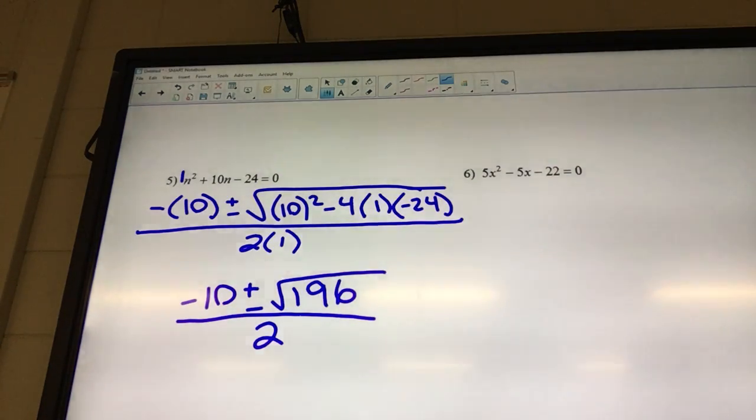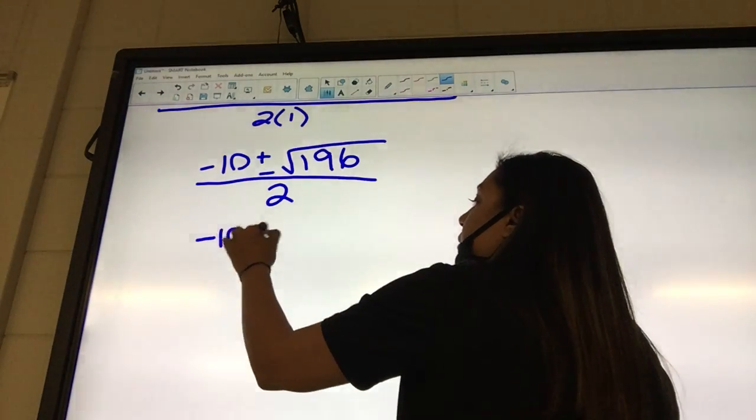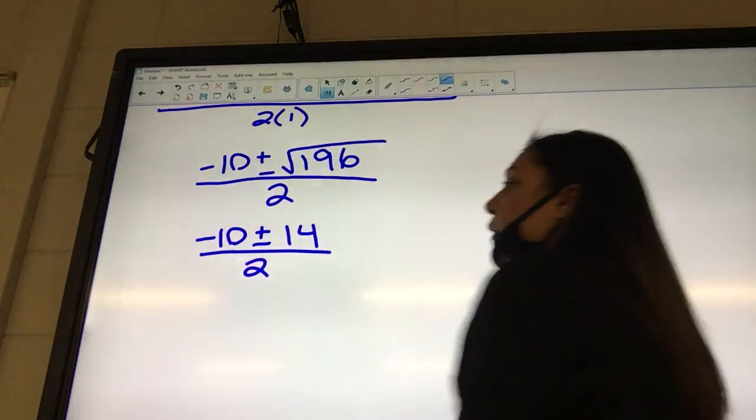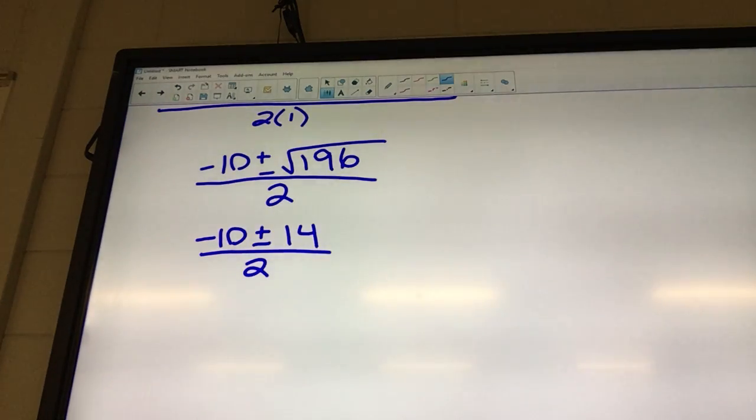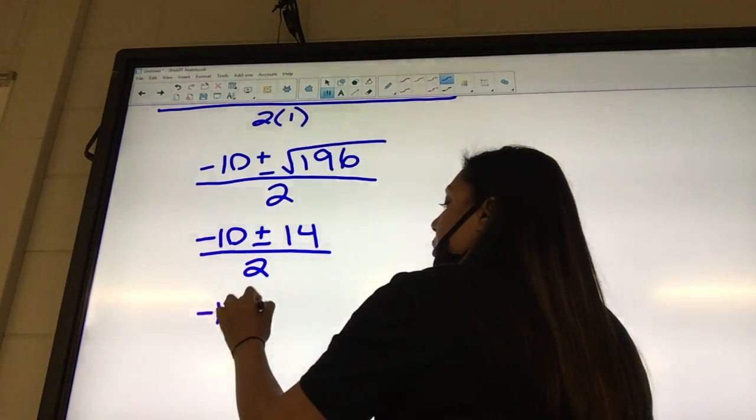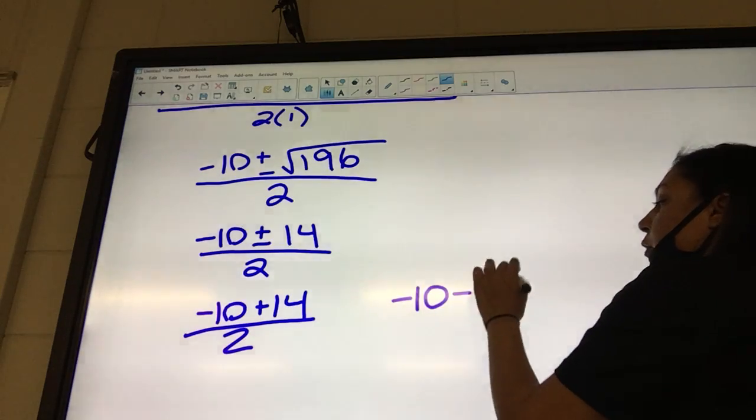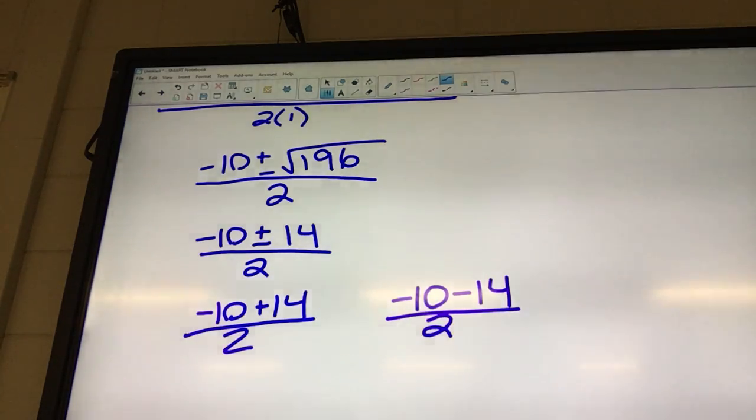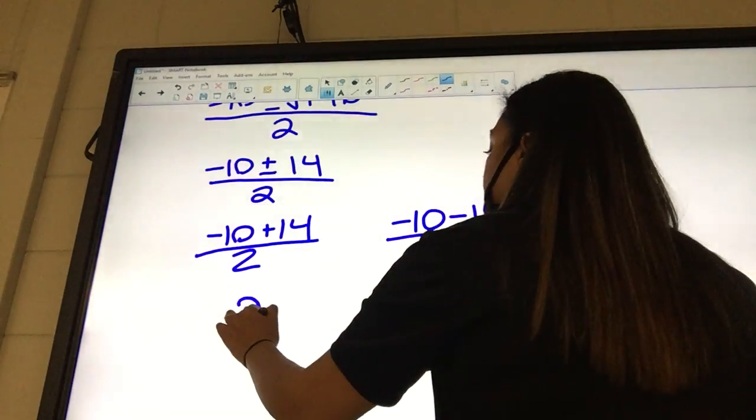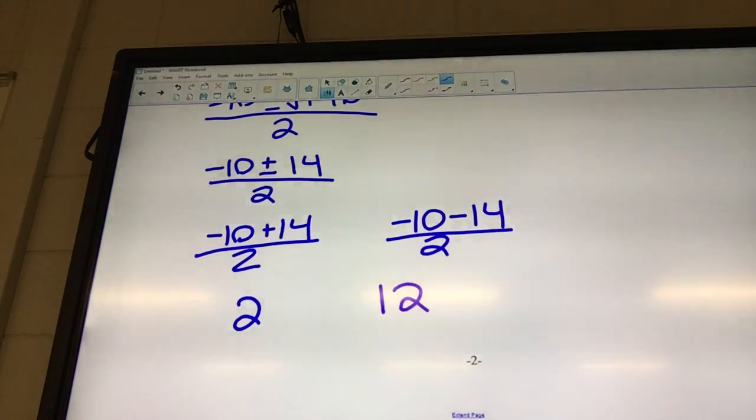Yes, to 14. Somebody agree? Yeah. Okay, so you're going to have negative 10 plus or minus 14 over 2. Now what do we do? We got to write it twice. Okay, so we're going to have negative 10 plus 14 over 2, negative 10 minus 14 over 2. First one is 2. And then the next one is negative 12. Good.